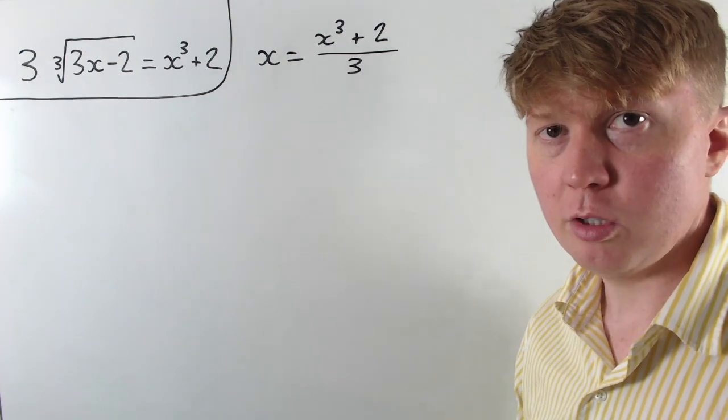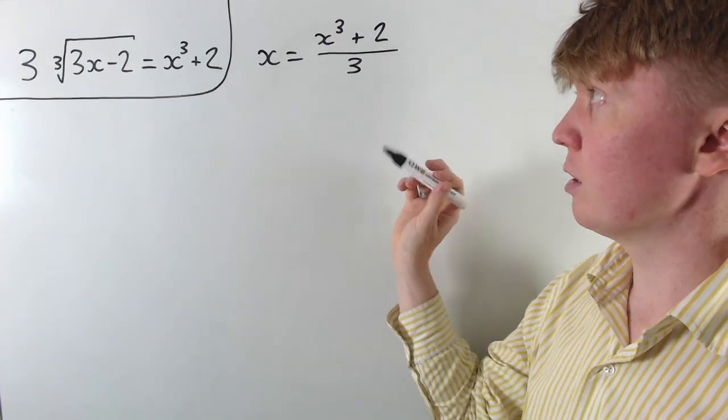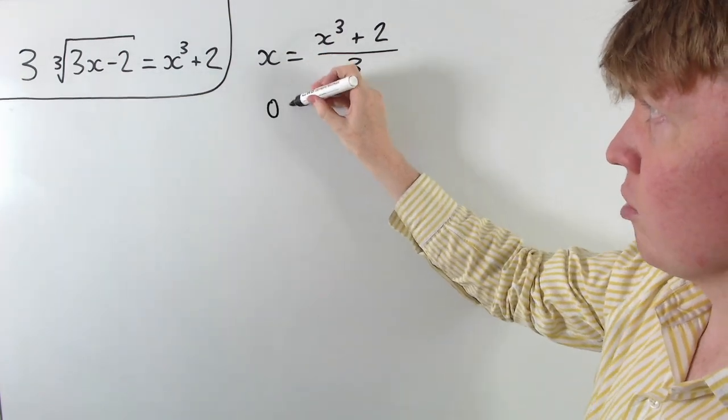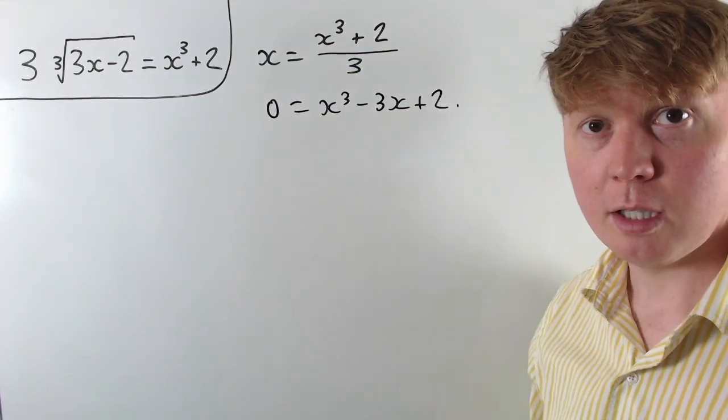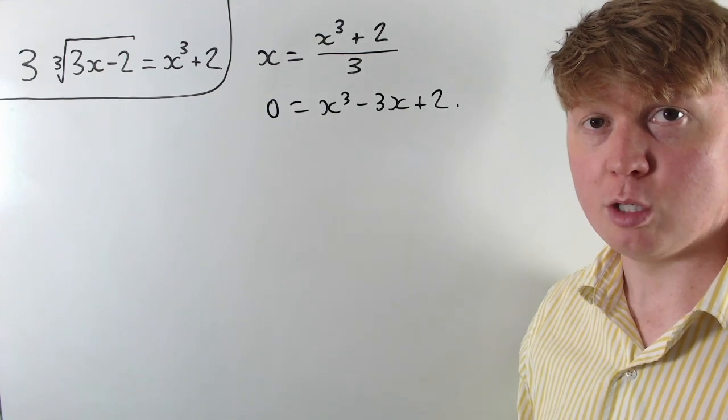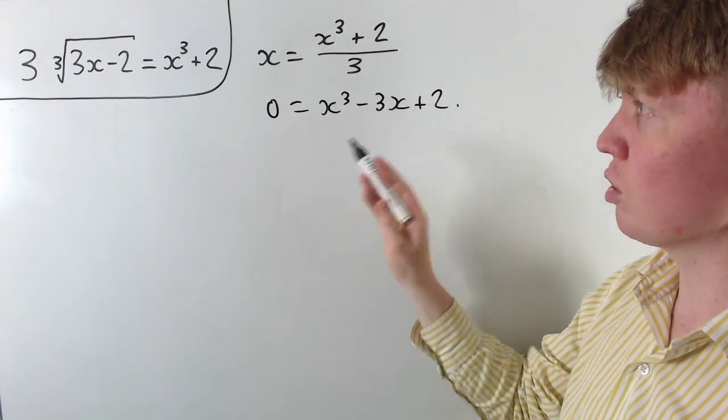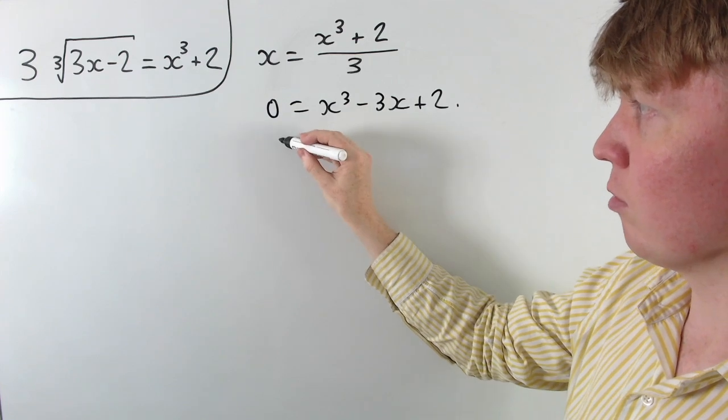Now to solve this we can just multiply by 3 on both sides and subtract 3x, which we have as 0 is x cubed, take away 3x plus 2. And at this point you might be able to see that x equals 1 is a solution here. If you substitute this in, this would give us 0.